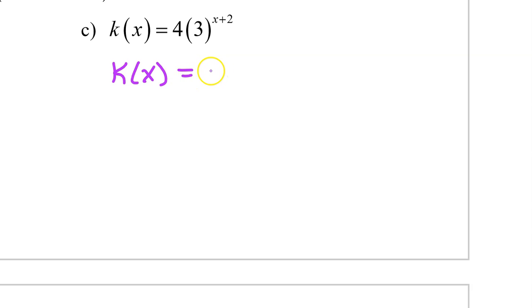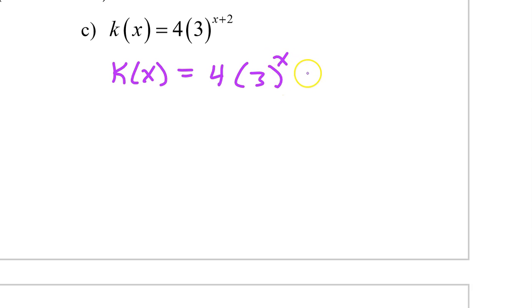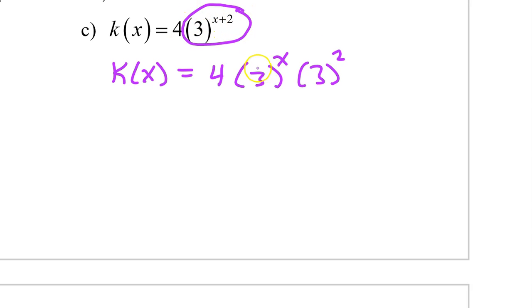For Part C, k of x can be rewritten as 4 times 3 to the x power times 3 squared. I'm splitting this exponent up into 3 to the x power times 3 squared.